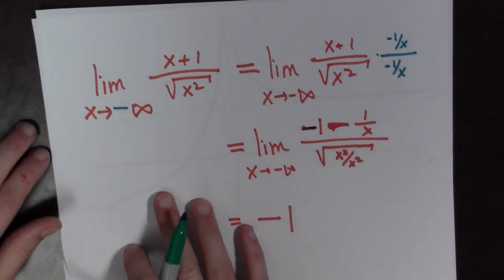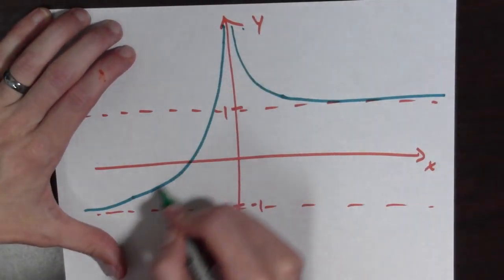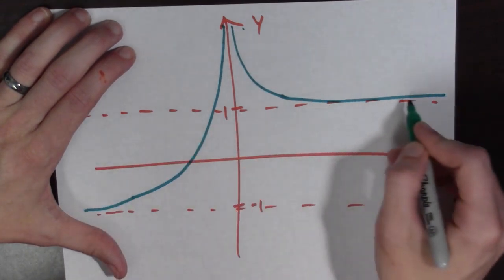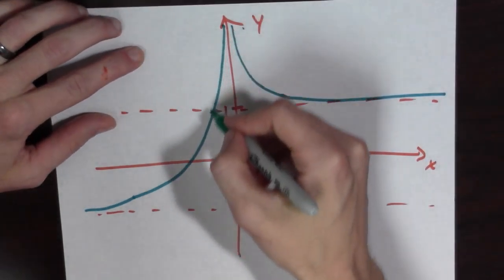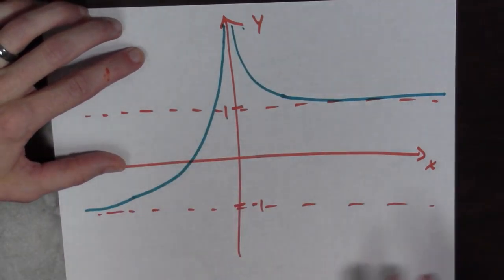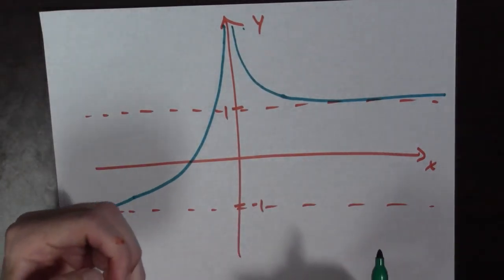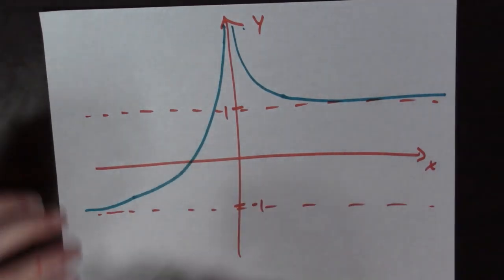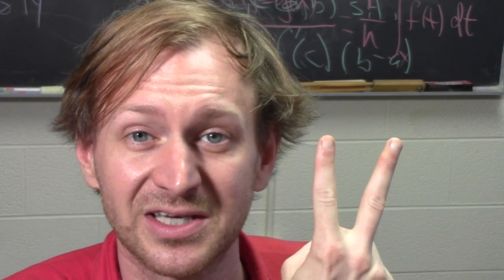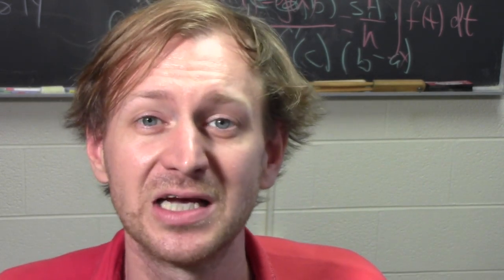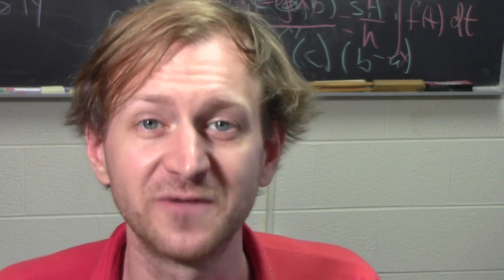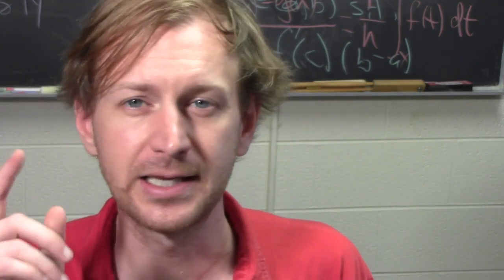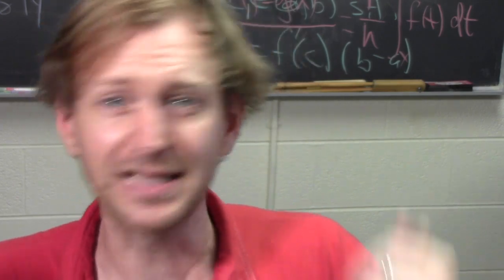Looking at the graph of f of x, here is our horizontal asymptote at y equals 1, and here is our horizontal asymptote at y equals negative 1. We can see the curve crossing the horizontal asymptote — again, it is perfectly legal for a curve to cross a horizontal asymptote. We've discussed two types of asymptotes: vertical, when f of x goes to infinity, and horizontal, when x goes to infinity. Keep your brain turned on — let's go do some more math.